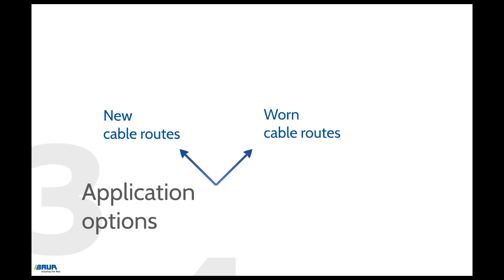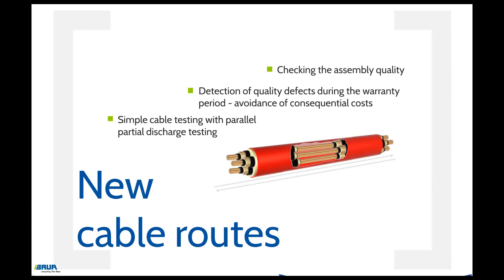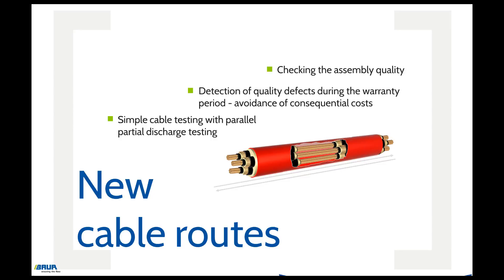Cable testing and diagnostics are used both on new cable routes before commissioning and on worn cables. Before the commissioning of new cable routes, testing and diagnostics are mainly used to check the assembly quality. Quality defects can be detected on time, thereby avoiding high consequential costs. In addition, newly laid cables are tested for safety-related defects by a simple cable test along with partial discharge testing.